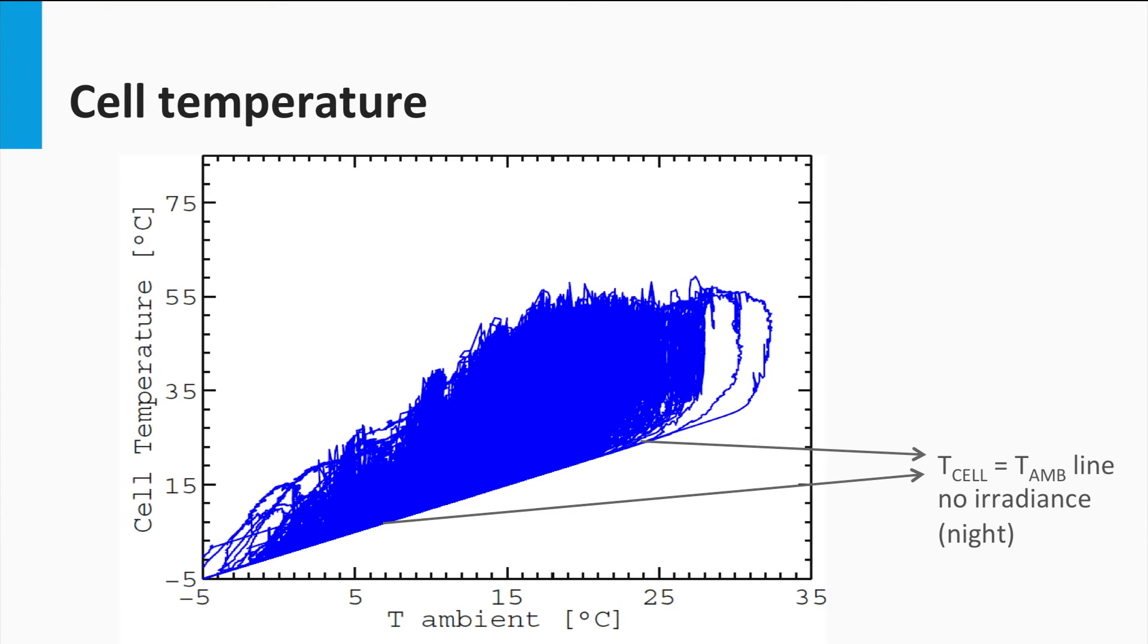The uneven spread of the cell temperature above the ambient temperature can also be explained. When the cell temperature is closer to the ambient temperature, this is because the impact of irradiance is lesser, meaning these set of points correspond to the irradiance and ambient temperatures during winter. Similarly, when the T-cell values go much higher than the ambient values, it is because the irradiance effect in the summer is quite high.